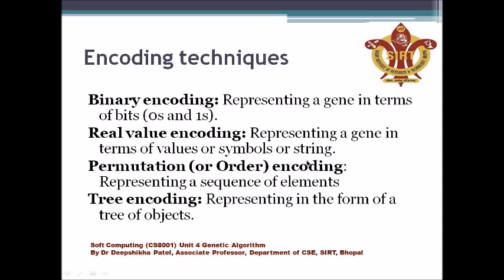Next is permutation or order encoding, which represents a sequence of elements. We use those elements in sequence — for example, in the Travelling Salesman Problem we can use a sequence of node visits. Tree encoding represents chromosomes in the form of tree objects. If there is some hierarchical problem, we can use tree encoding, where the representation is in the form of tree nodes and child nodes.